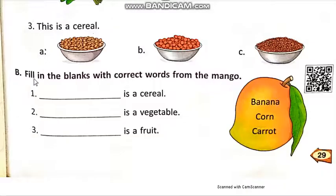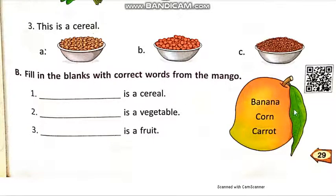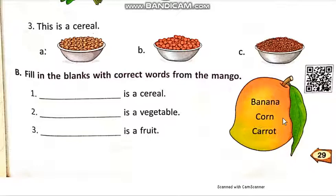B. Fill in the blanks with correct words from the box. In blanks ko fill karay correct words se jo is box mein diye gaye hain. Number one is banana, number two corn, number three carrot. Number one: Dash is a cereal. The answer is corn.